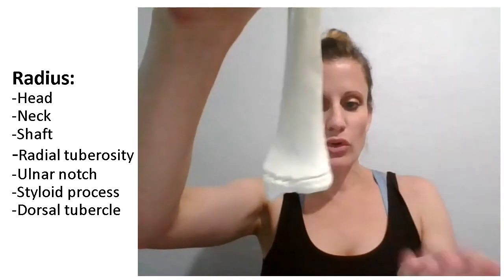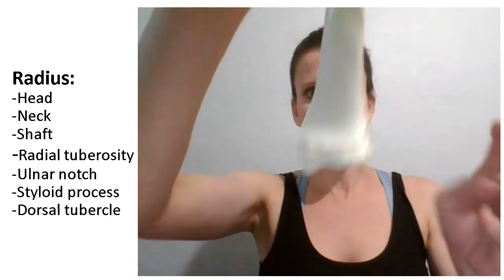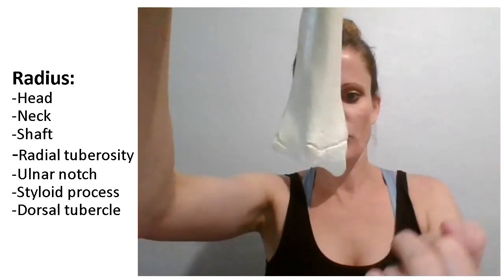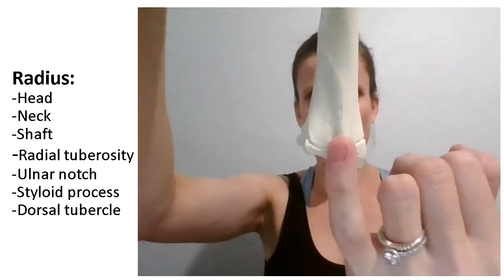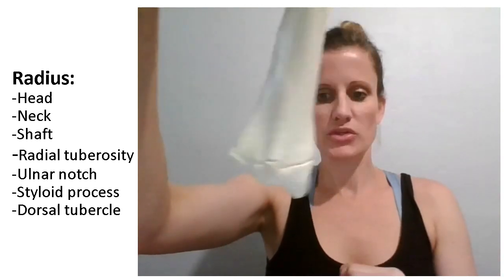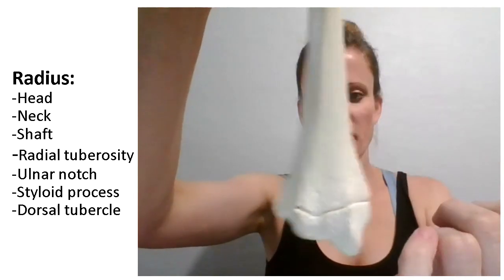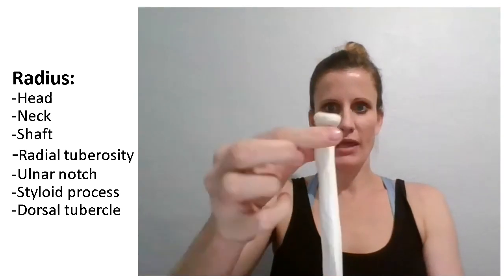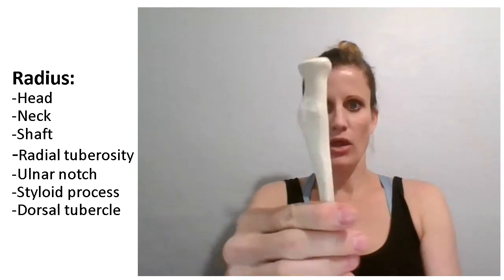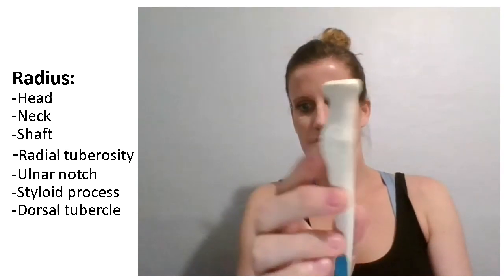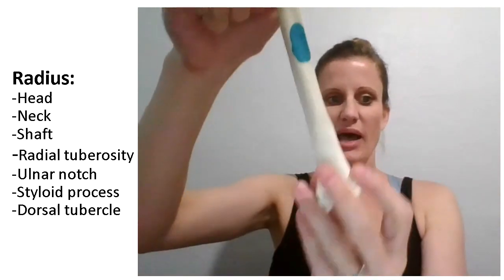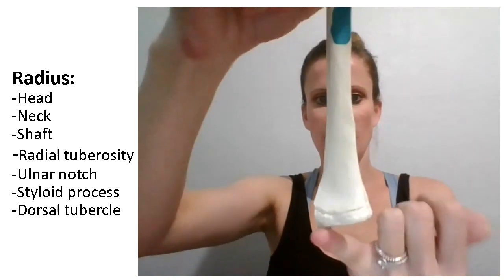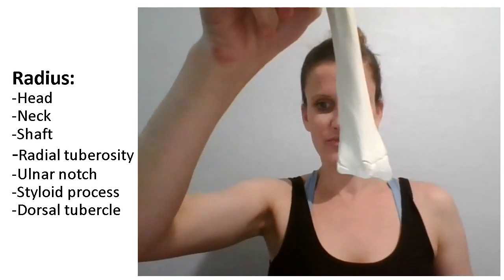The dorsal tubercle is on the posterior side, on the back of the radius. If I turn this around, you'll see right here this little protrusion sticking out in the middle — that's the dorsal tubercle. The front is more smooth, but the back has this little bump in the middle. So to summarize: head, neck, shaft, radial tuberosity sticking off, and down at the bottom: ulnar notch and styloid process. On the back, the dorsal tubercle. That's it.